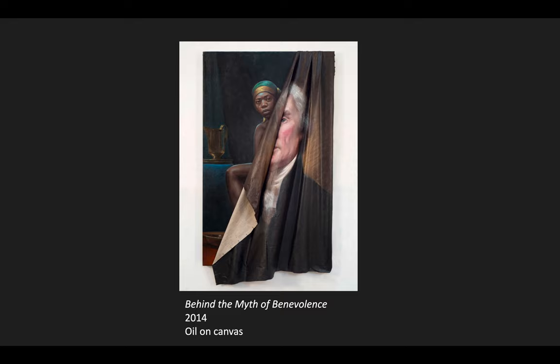Behind the Myth of Benevolence shows us a portrait of Thomas Jefferson half hanging loosely, revealing another painting of a Black woman behind him. In the image, her hair is covered and her bare arm and leg are exposed, suggesting that she is nude. The painting raises the question of the relationship between the two people in the images. Sally Hemings was a slave of Thomas Jefferson's, and it is highly suspected with multiple lines of evidence that she and Jefferson had a long sexual relationship and that Jefferson is the father of her six children.